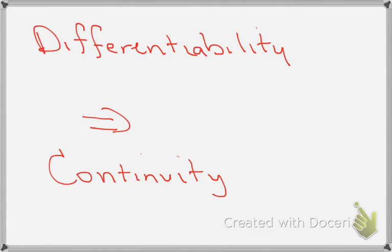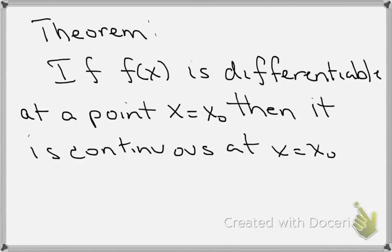In this video I want to show you that if you have a function and you know that it's differentiable at a point, then it's also continuous at that point. The theorem says: if f of x is differentiable at a point x equals x naught, then it's also continuous at x equals x naught.